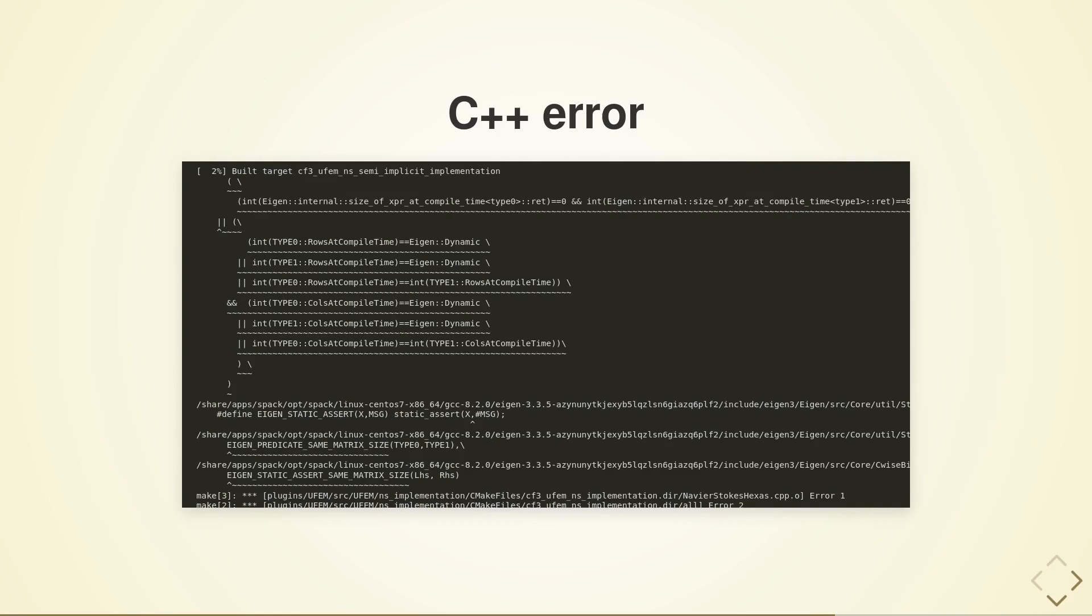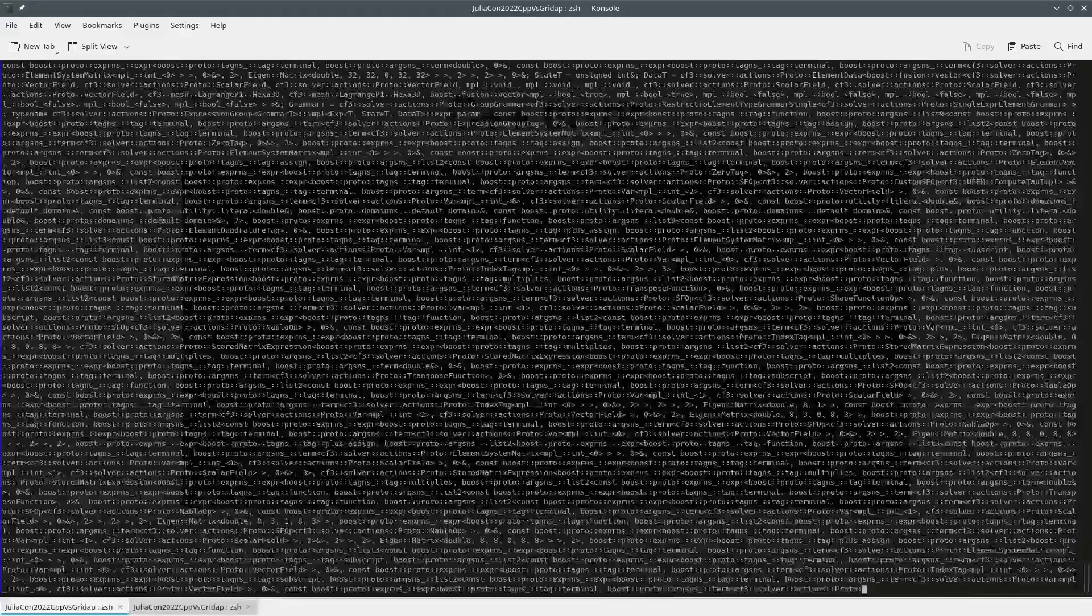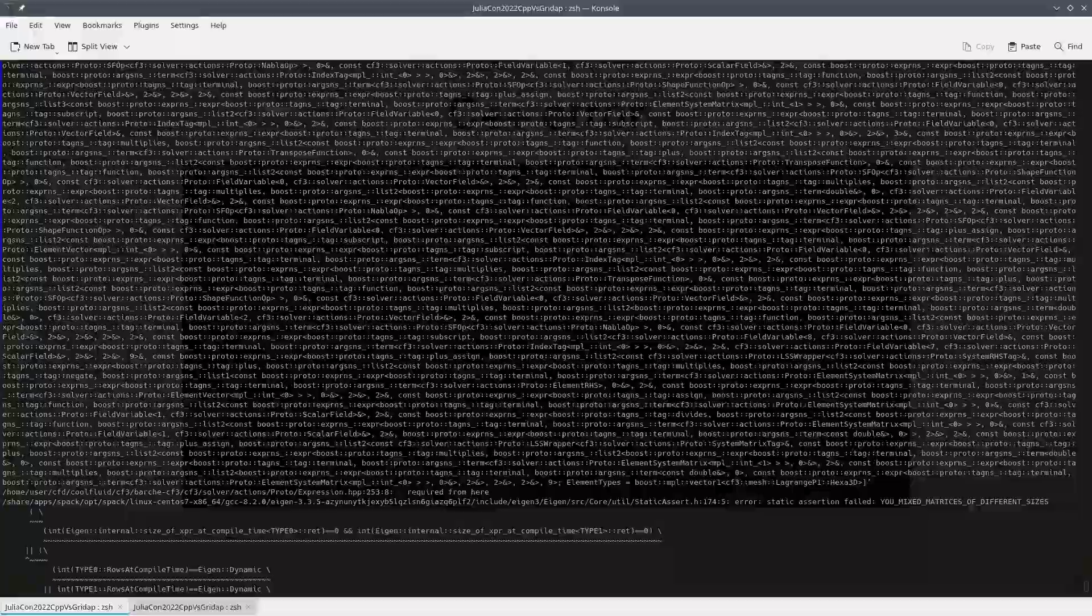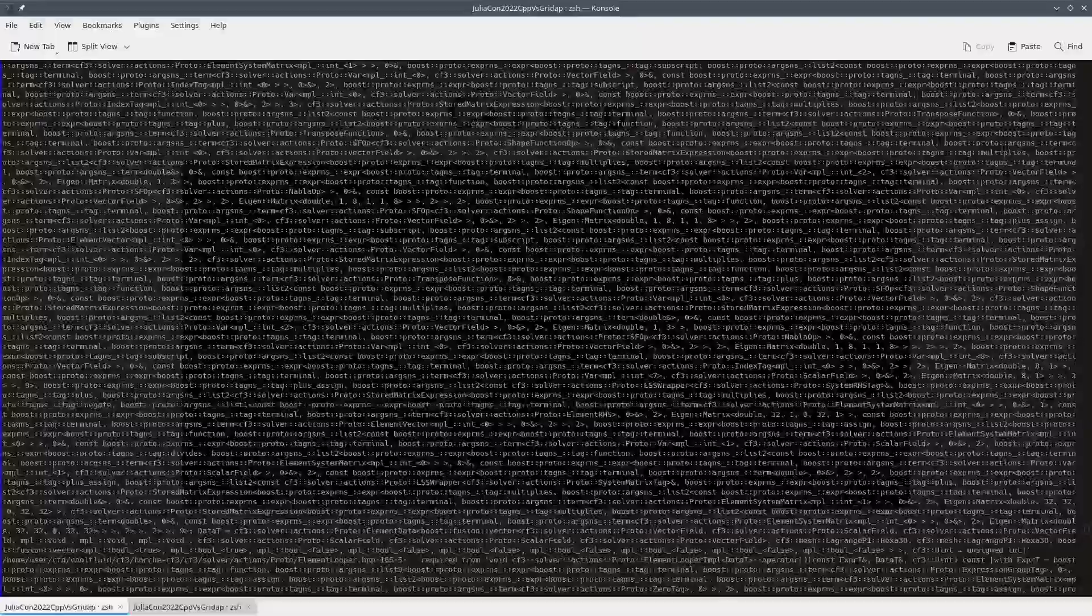One downside of lazy evaluation and expression templates is that the compiler generates very long parametric types, which are often printed in error messages. For example, if we take a look at what happens if we make an error in C++, this would be the error that we obtain. As you can see, if we scroll back a bit through it, there's a lot of text here.